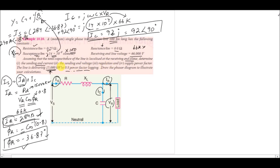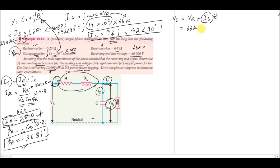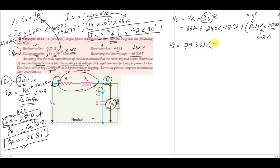For the sending end voltage: VS = VR + IS × Z. VR = 66 kV, IS = 240∠−18.96°, and impedance Z = (R + j·XL) × 100, where resistance is 0.25 Ω/km and reactance is 0.8 Ω/km. Multiplying by 100 km gives the total impedance. The result is VS = 79,583 V∠11.50°.